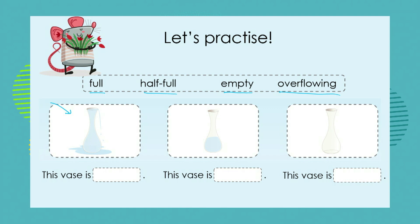This vase is overflowing. We can see that the water has gone over the top of the vase and spilt onto the floor, which means there is too much water in this container — so it is overflowing.